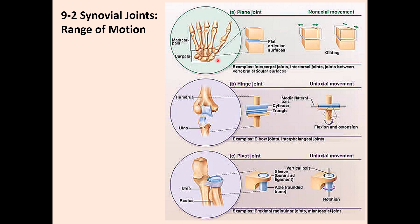The second classification is uniaxial — movement along one specific axis. These divide into hinge joints and pivot joints. Hinge joints allow movement in only one direction: flexion and extension. One bone is convex and the other concave. Examples include the elbow joint (trochlea of humerus with trochlear notch of ulna), interphalangeal joints of the fingers and toes, and the knee joint between the femur and tibia.